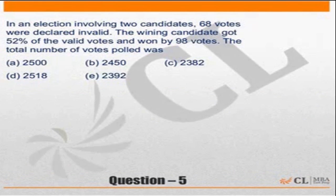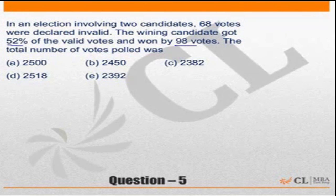In an election involving two candidates, 68 votes were declared invalid. The winning candidate got 52 percent of the valid votes and won by 98 votes.